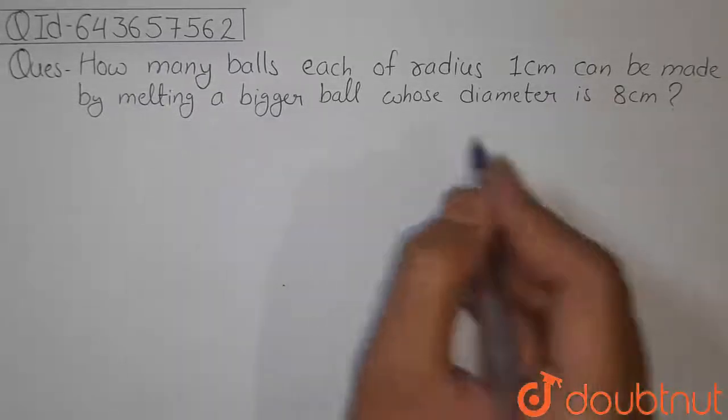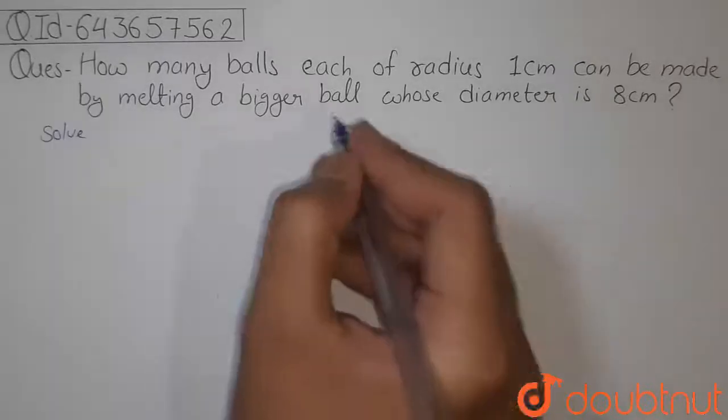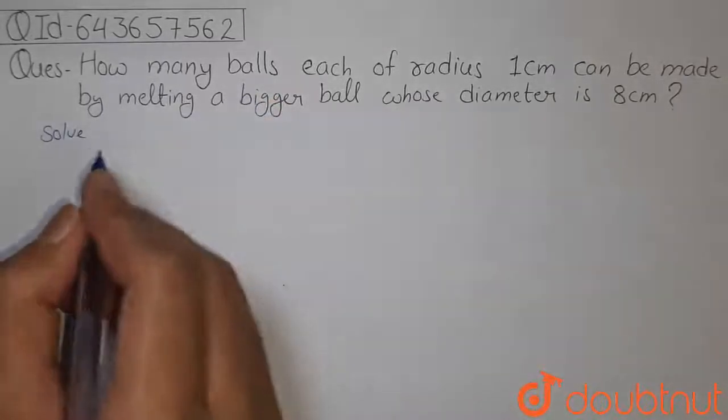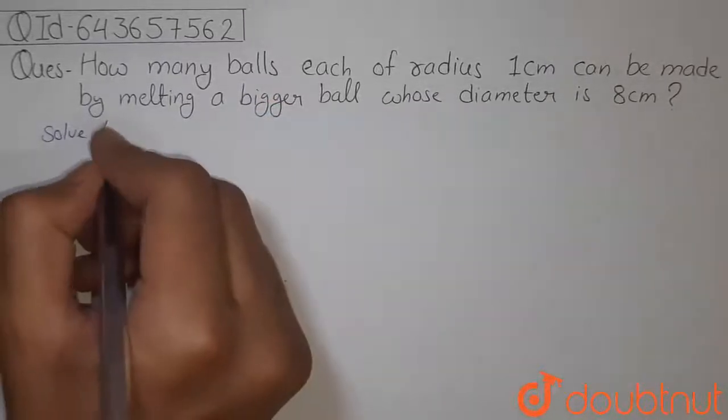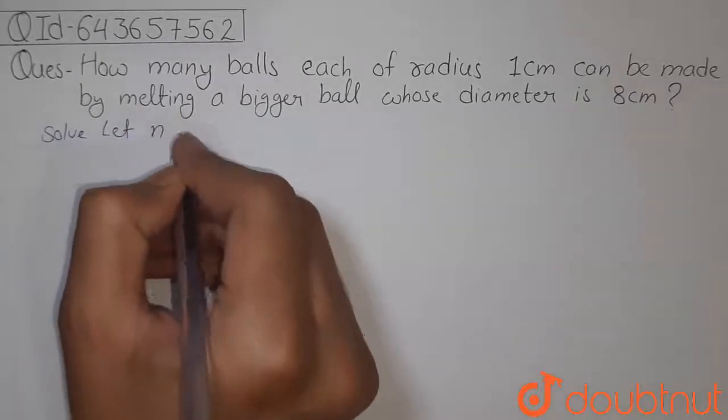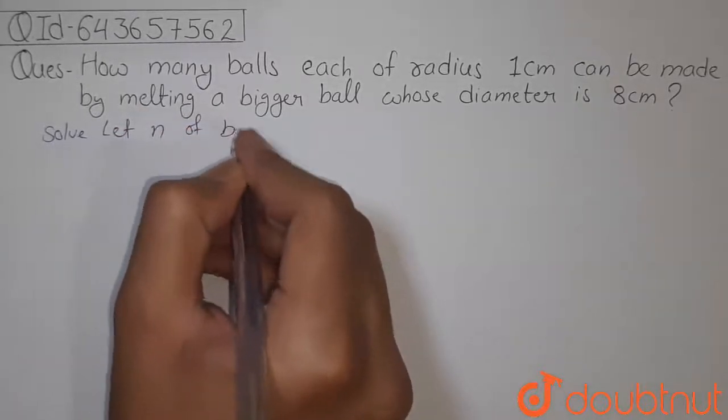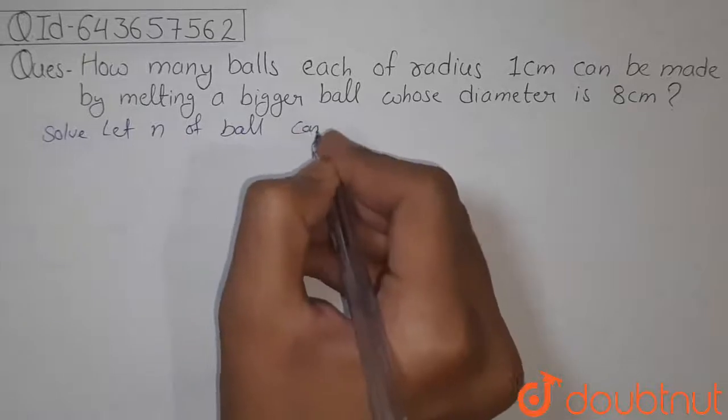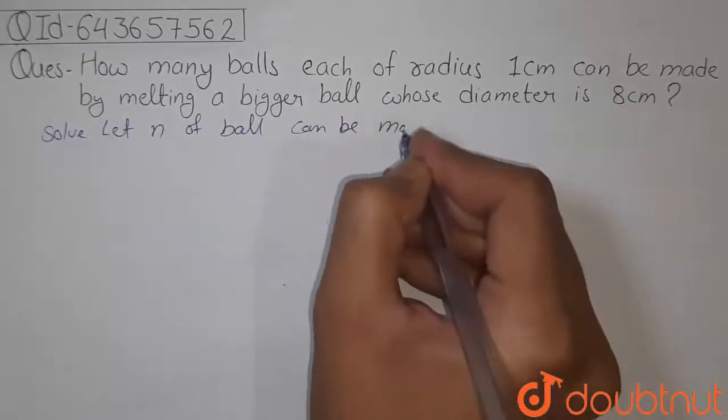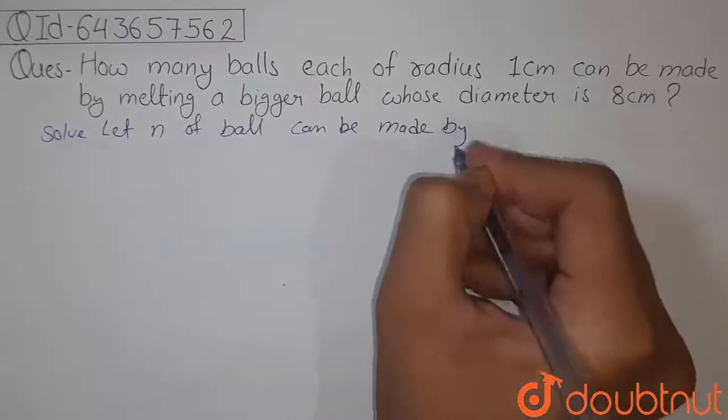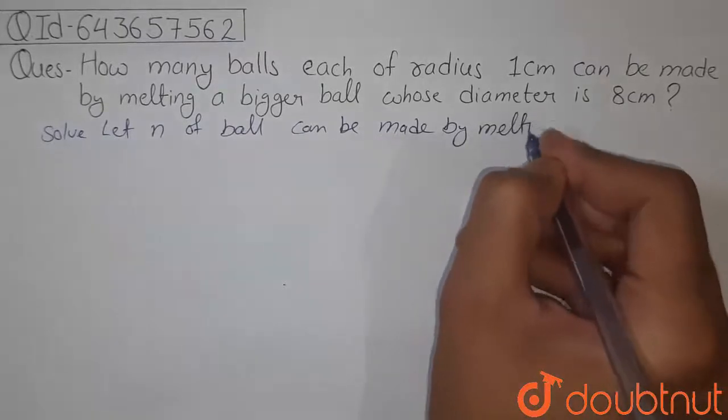First, we will assume how many balls can be made. So let n number of balls can be made by melting the bigger one.